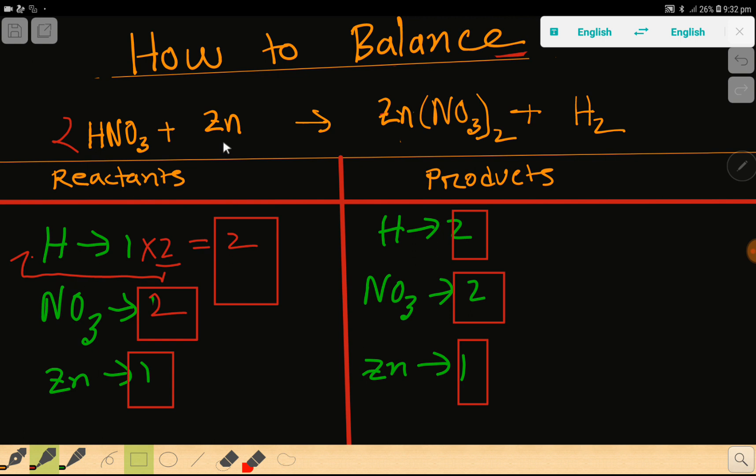So you can say that this is the balanced reaction. At last, you can change this arrow sign by equal sign for balanced chemical equation. For a reaction it's okay, but for balanced chemical equation you can change this arrow sign by equal sign.